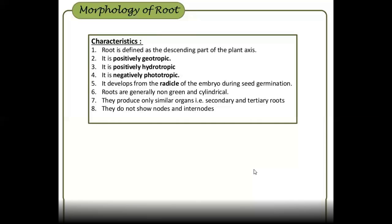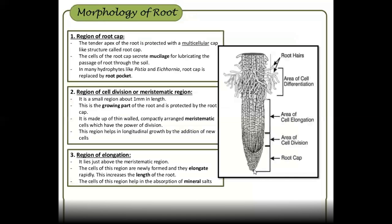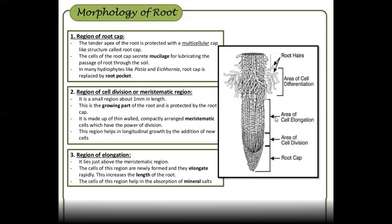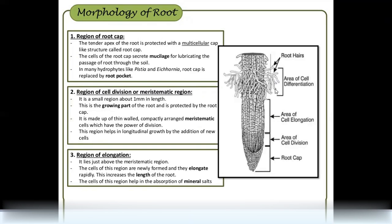Roots do not have nodes and internodes. The morphology of the root has several parts. The root is mainly anchored into the plant. The root has root hairs, an area of elongation, an area of cell division, and the root cap.